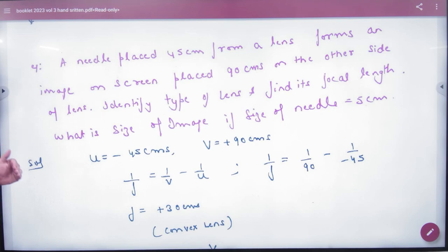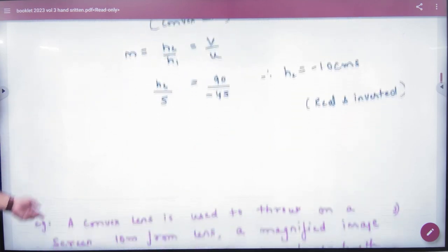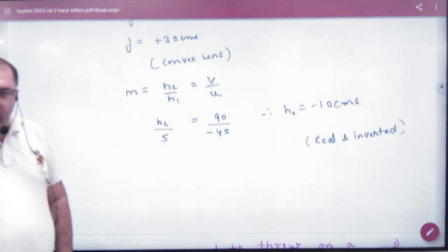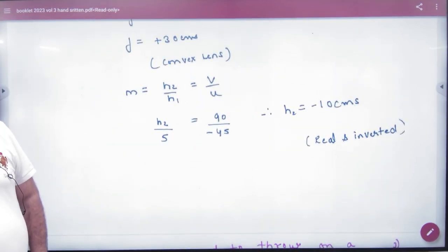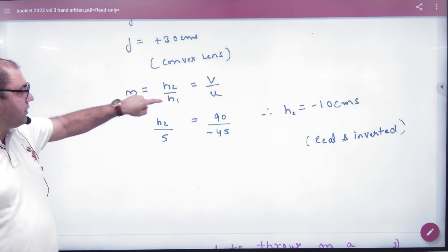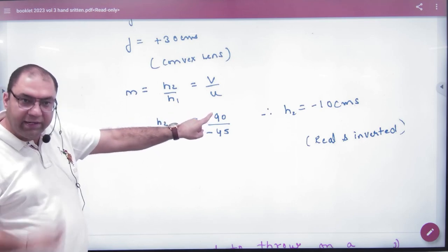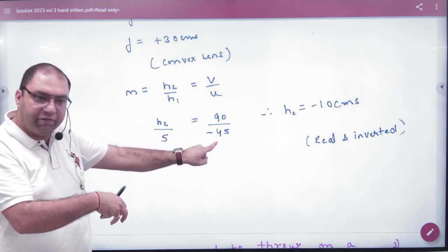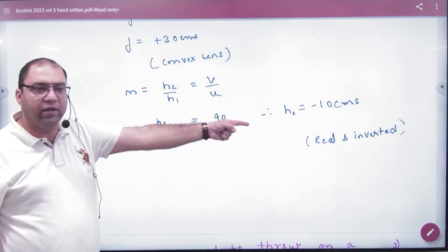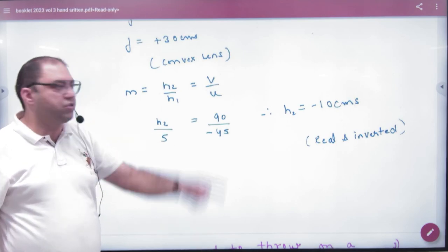Then he asks: what is the size of the image if the needle size is 5 cm? If the size of the object is 5, then what will be the size of the image? Here we have the magnification formula. This can be done with sign convention. H2 is height of image. Height of object is plus 5. V is plus 90, U is minus 45. Cross multiply and solve. The negative sign means the image is inverted.